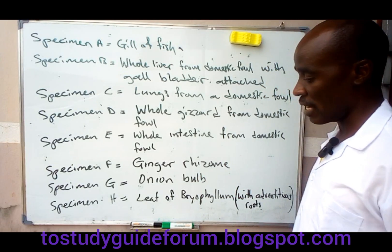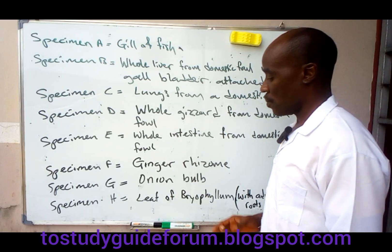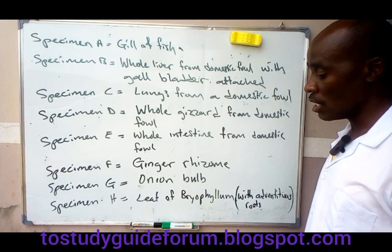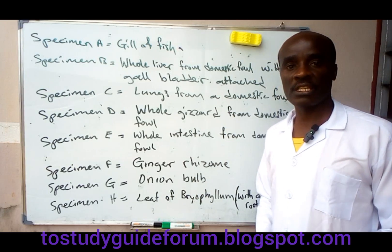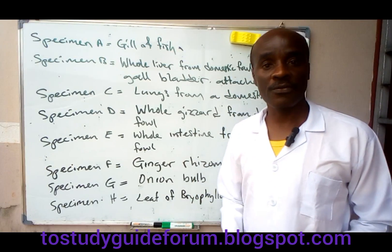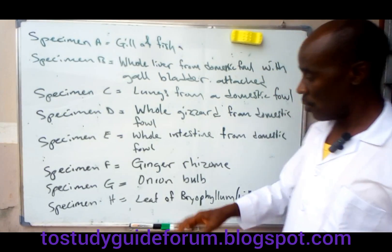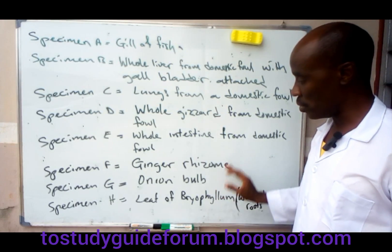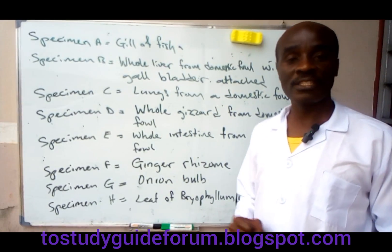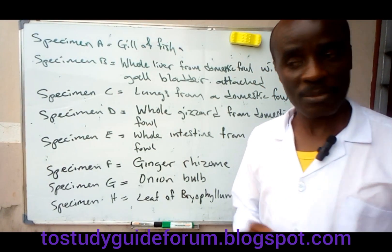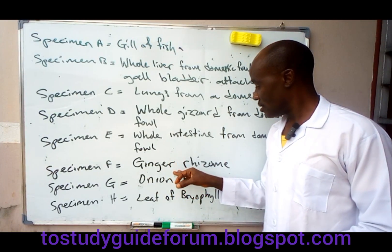We'll also talk about Specimen R, which is an orange seed, and Specimen N, which is a mango seed. The orange seed and mango seed are products of sexual reproduction, because they result from the sexual reproduction process.